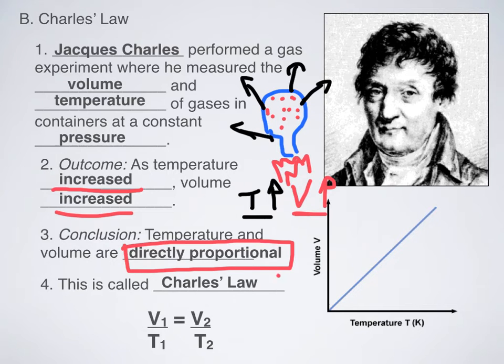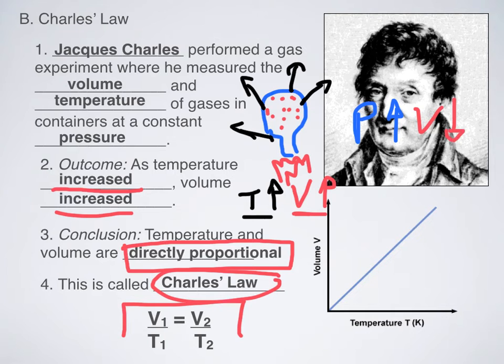So, what do we call that? We call that Charles' Law. And how do you represent that mathematically? It's right here at the bottom. V1 over T1 equals V2 over T2. That's what a direct proportion is. If one variable increases, the other variable increases. Now, compare that to Boyle's Law. Boyle's Law was kind of the opposite. If pressure went up, then volume went down. And that's why that is an inverse proportion.